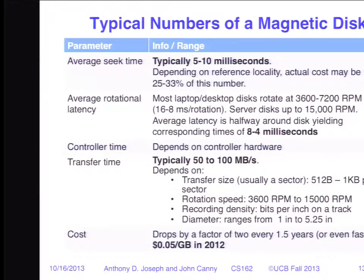Average rotational delay: laptop and desktop drives typically rotate at 3600 to 7200 RPM — most are probably 4500, with higher-end drives at 7200 RPM — giving a rotational delay of 8 to 16 milliseconds. For the average, you only wait half a rotation, so cut those numbers in half. Drives in server environments spin at 15,000 RPM. You don't want to stand next to a large chunk of metal spinning at that speed — the ceramic platters are contained by the drive's frame for safety.